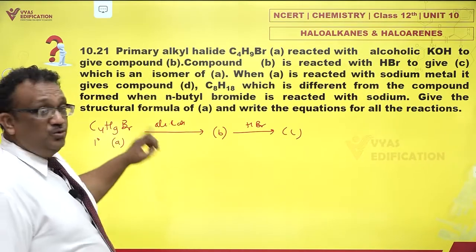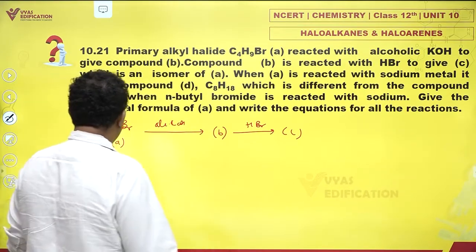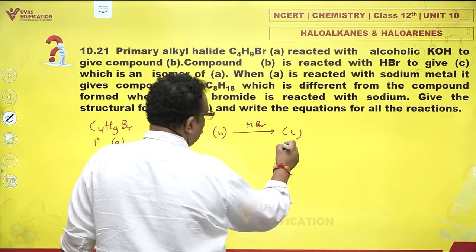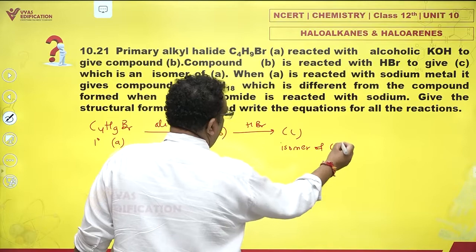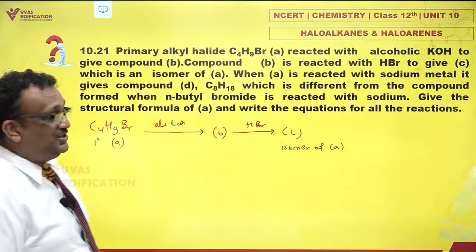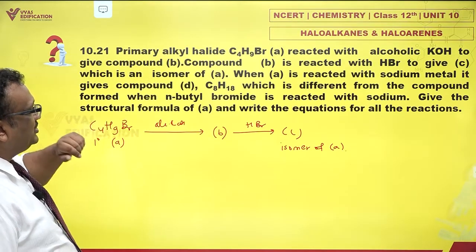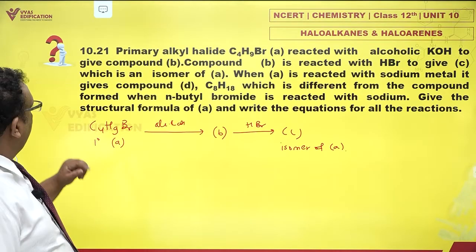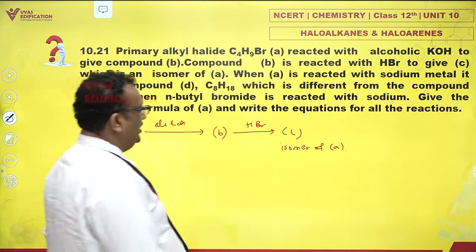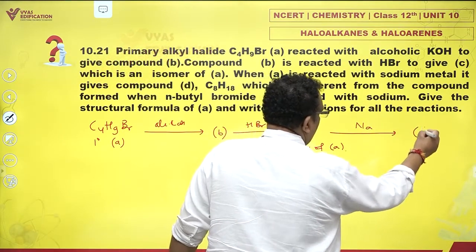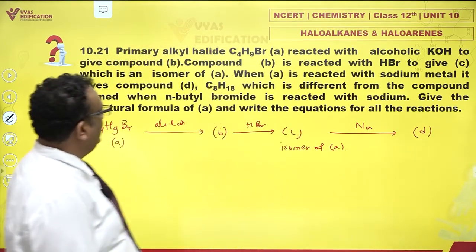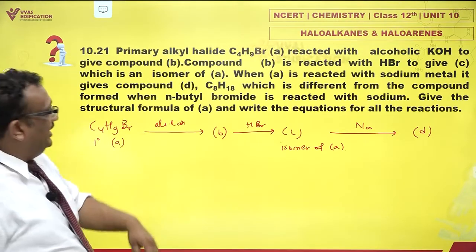C is an isomer of A. Well, C they are telling me is an isomer of A. Fascinating. When A is reacted with sodium metal, it gives a compound D. Now I have to give a Wood's reaction. It gives D, and D is C8H18.